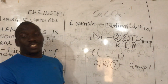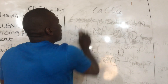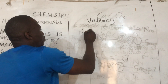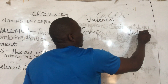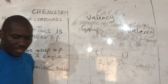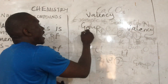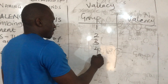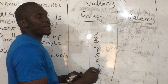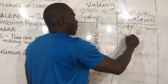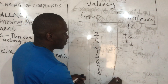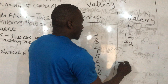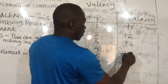How do we get valency? We have 8 groups in total in the periodic table. Group 1 has valency of +1, Group 2: +2, Group 3: +3. Group 8 has 0. Group 7: −1, Group 6: −2, Group 5: −3, Group 4: +4 or −4.